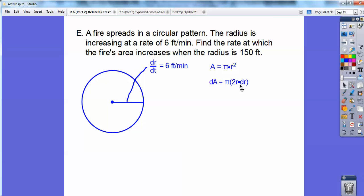So now I know that r is 150. I know that dr is 6. And I'm looking for the rate at which the fire's area increases. So I'm looking for dA. So it's just plugging in the numbers there.